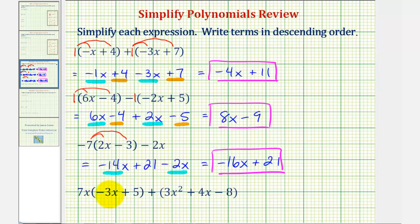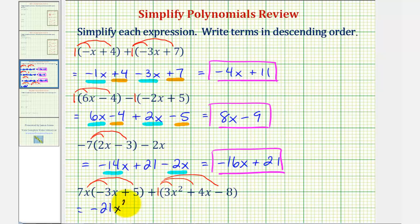We have two x times the quantity negative three x plus five, plus the quantity three x squared plus four x minus eight. We'll distribute positive seven x here, and put a one here to distribute positive one. Seven x times negative three x is negative twenty-one x squared. And then seven x times positive five is plus thirty-five x. By distributing positive one, it's not going to change any of these terms, so we'll have plus three x squared plus four x minus eight.